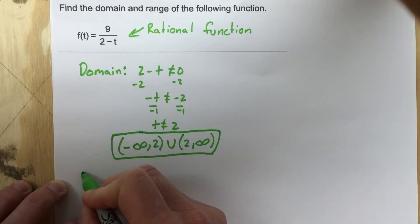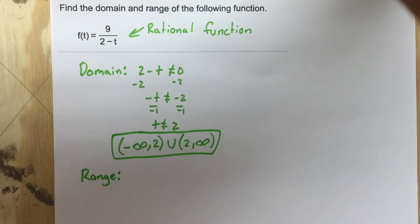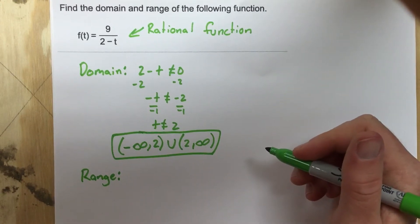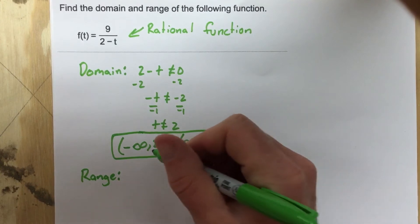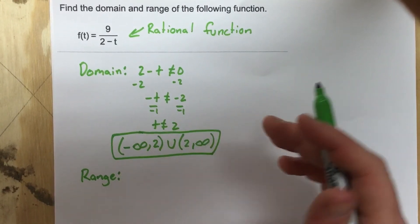Now for the range, the range takes a little bit of work to find the range for a rational function. In order to find the range, what we're really looking for is we're looking for the y values that work for our inputs or our domain. And what's the range of y values that work.